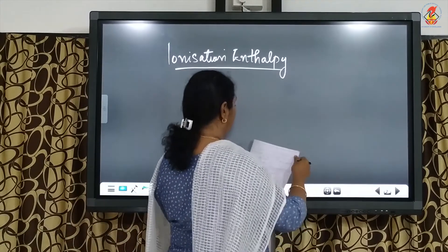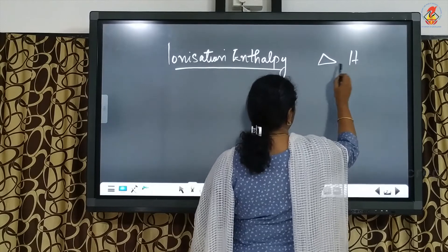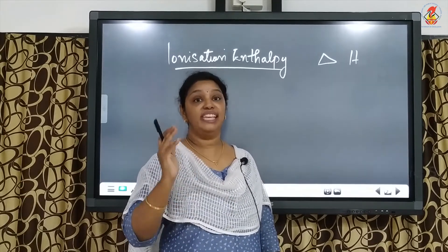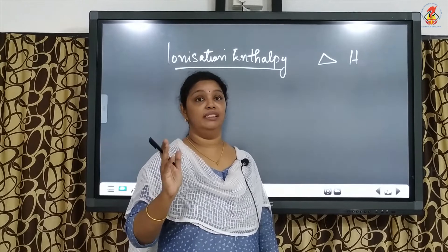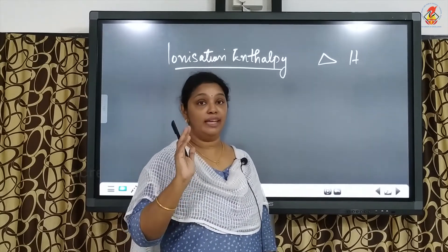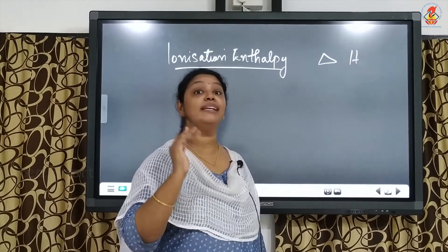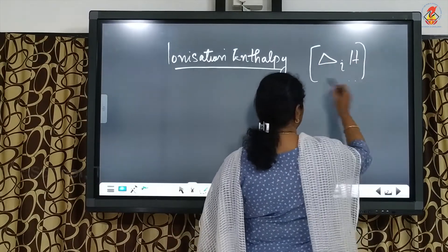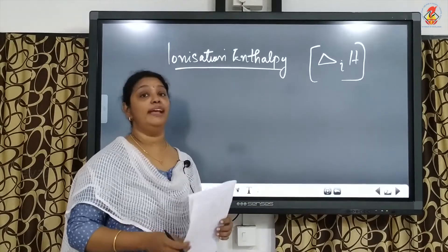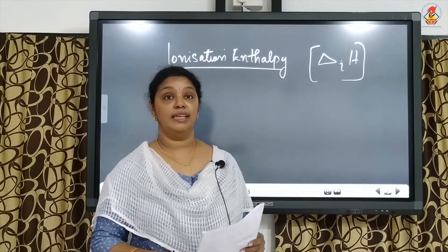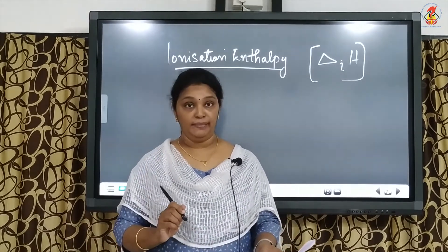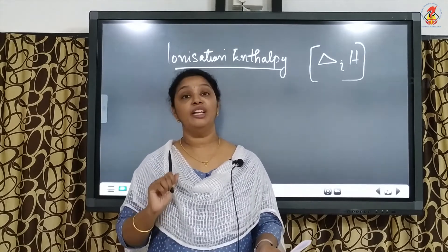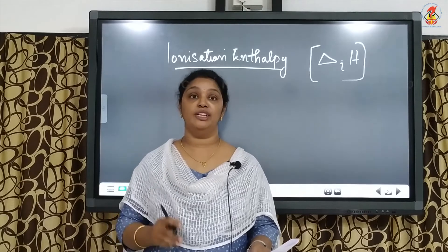Ionization enthalpy is denoted as delta H. Delta H is the enthalpy change — delta stands for change and enthalpy means heat, so change in heat energy is called enthalpy. Delta H i is ionization enthalpy. The amount of energy required to remove the most loosely bound electron from an isolated gaseous atom is called ionization enthalpy.